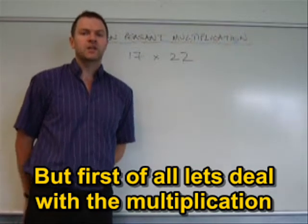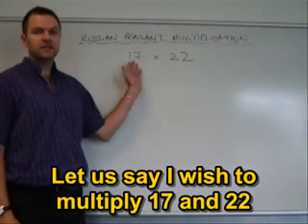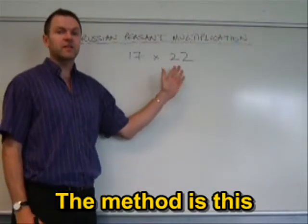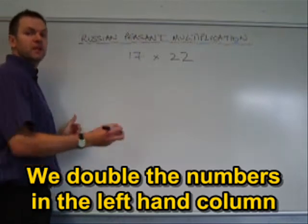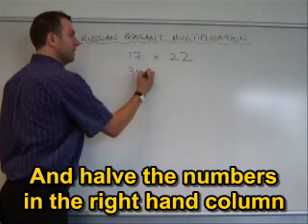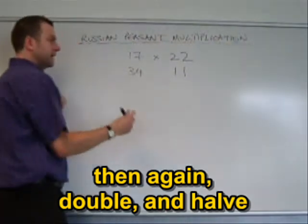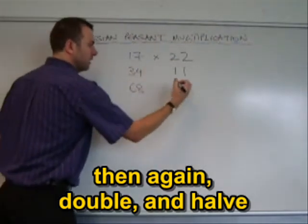But first of all, let's deal with multiplication. Let's say I want to multiply together 17 times 22. The method is this: we double the numbers in the left-hand column and half the numbers in the right-hand column. Then again, double and half.